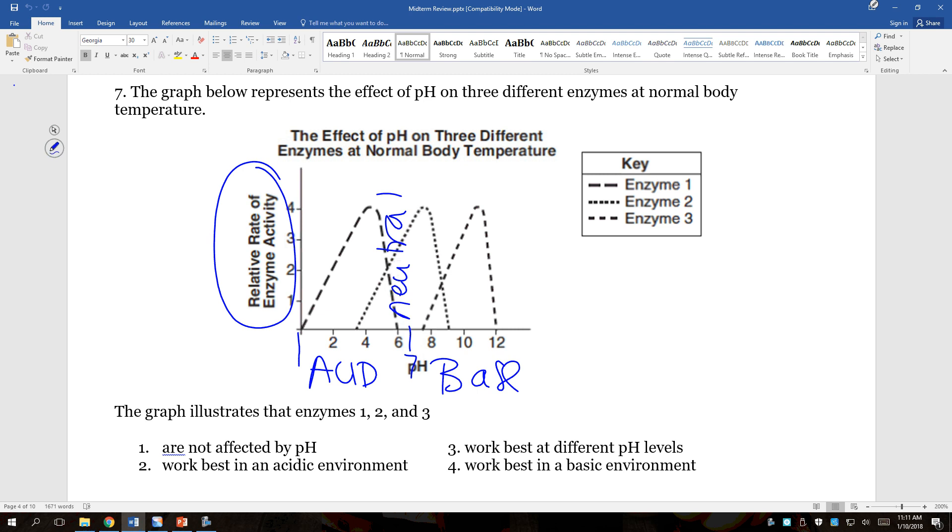So the graph illustrates that enzymes one, two, and three, this is going to be answer choice three. They work best at different pH levels. One is not true because it says they're not affected by pH. If we look at enzyme one, enzyme one is working best at a pH of about four. Enzyme two is working best at about a pH of seven, 7.5. And then the third enzyme is working best at a pH of 11.